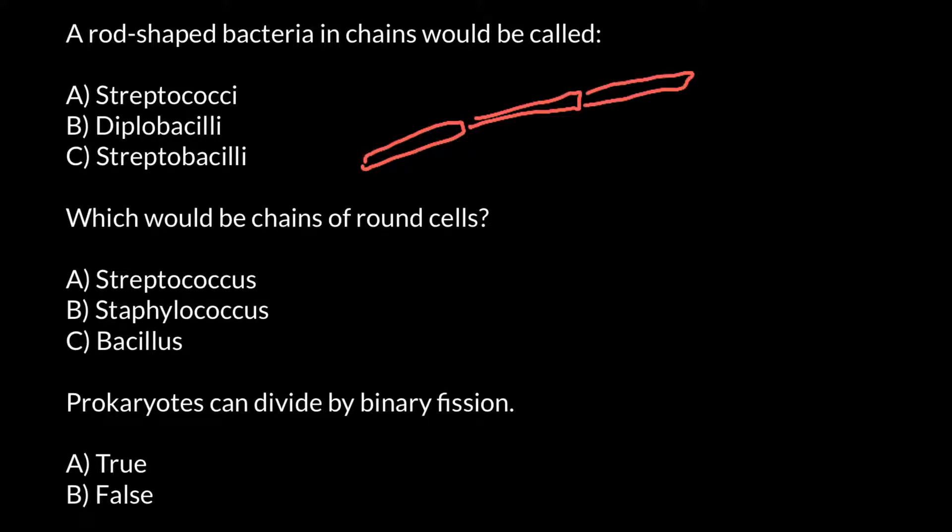by its poles and would make such chains. So when we have a chain of bacteria we call this strepto, and in our case rod-shaped bacteria are also called bacillus, so this is answer C: streptobacillus.